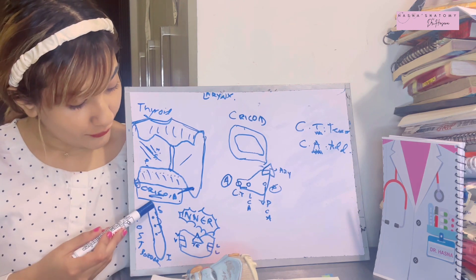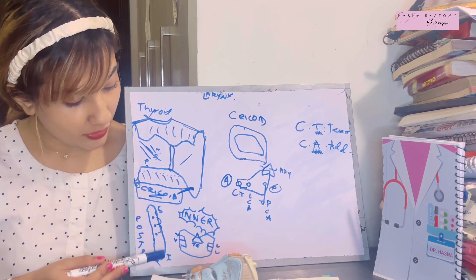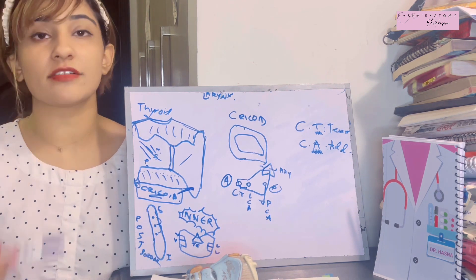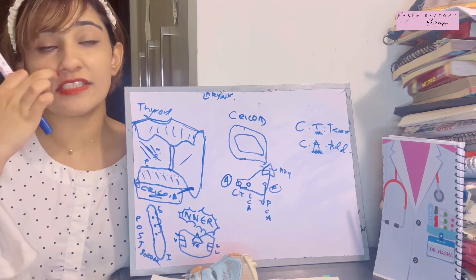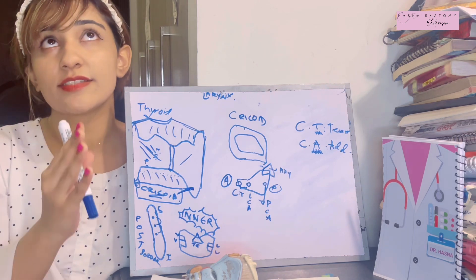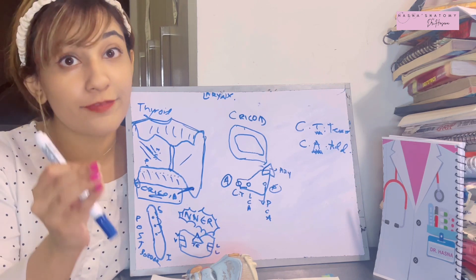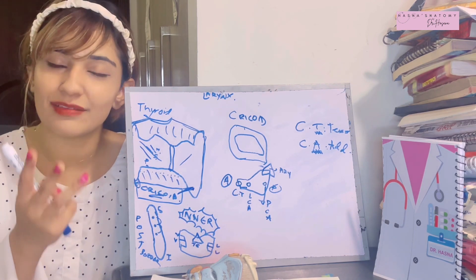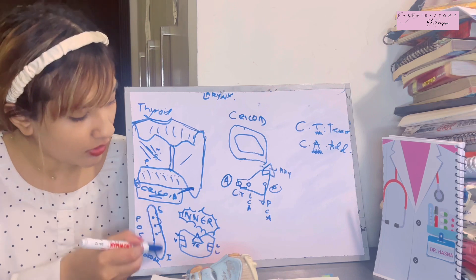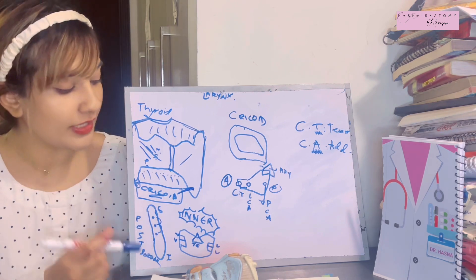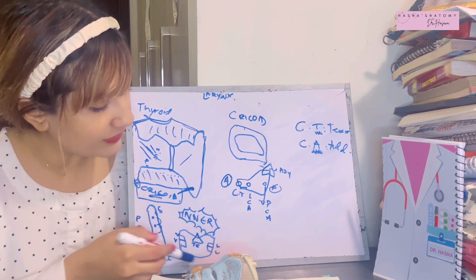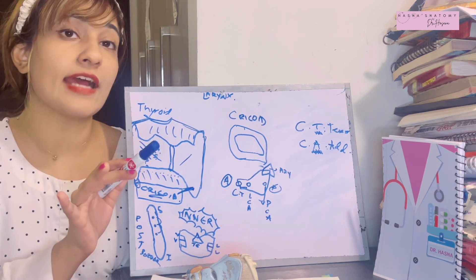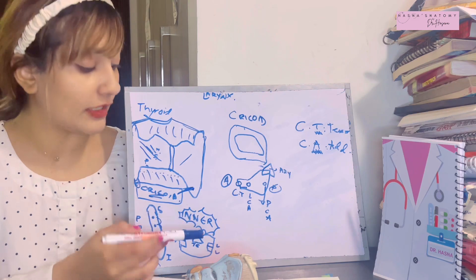For the next part of the attachments, from the superior horn to the inferior horn, three muscles are attached there — the same ones we studied in the pharynx: stylopharyngeus, palatopharyngeus, and salpingopharyngeus. These all attach along that posterior border region.